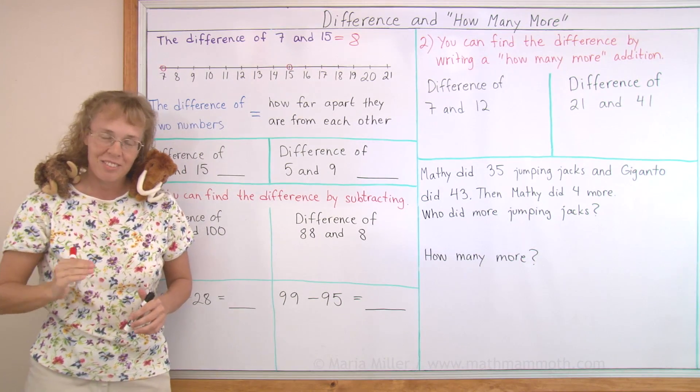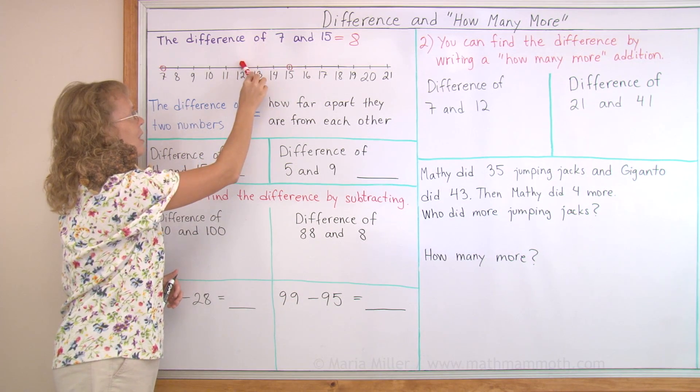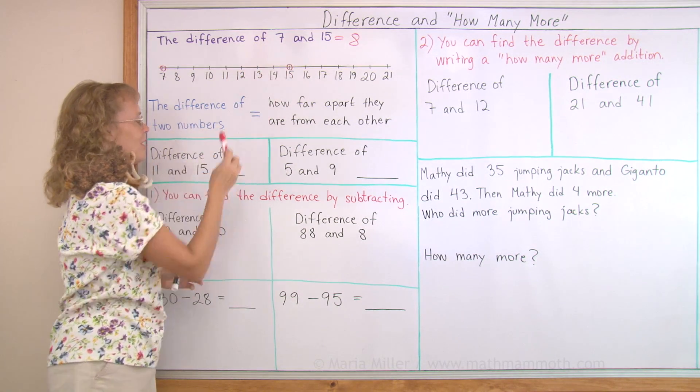Difference of 11 and 15, again, I can go on the number line, 11, 15, 1, 2, 3 and 4. So that would be 4.